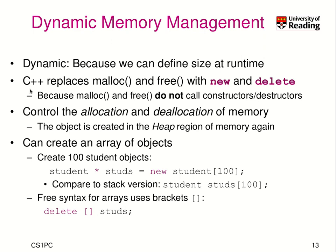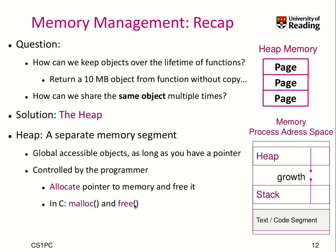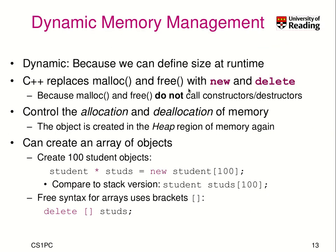In C++ we learned that we shouldn't use malloc and free, but should use new and delete — the new keywords introduced in C++. This is because malloc and free do not call constructors and destructors, but in C++ we're dealing with objects, so we must use new and delete. They control the allocation and deallocation of memory. Even new and delete are basically malloc and free, but with syntactic sugar to call the constructor and destructor.